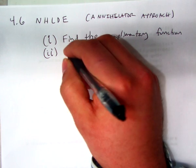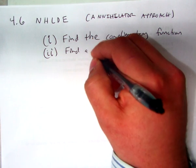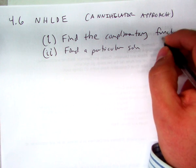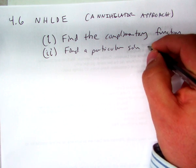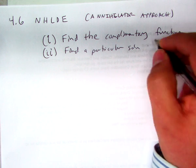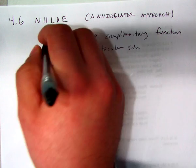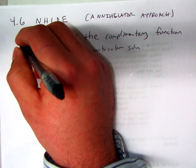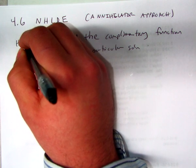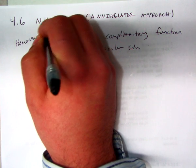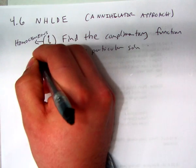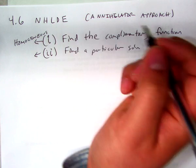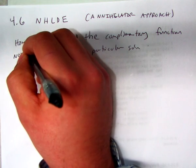To find a particular solution. And step one, this is the equivalent of solving the equation if it were homogeneous. Step two, now we actually solve the particular solution and we treat it as non-homogeneous.